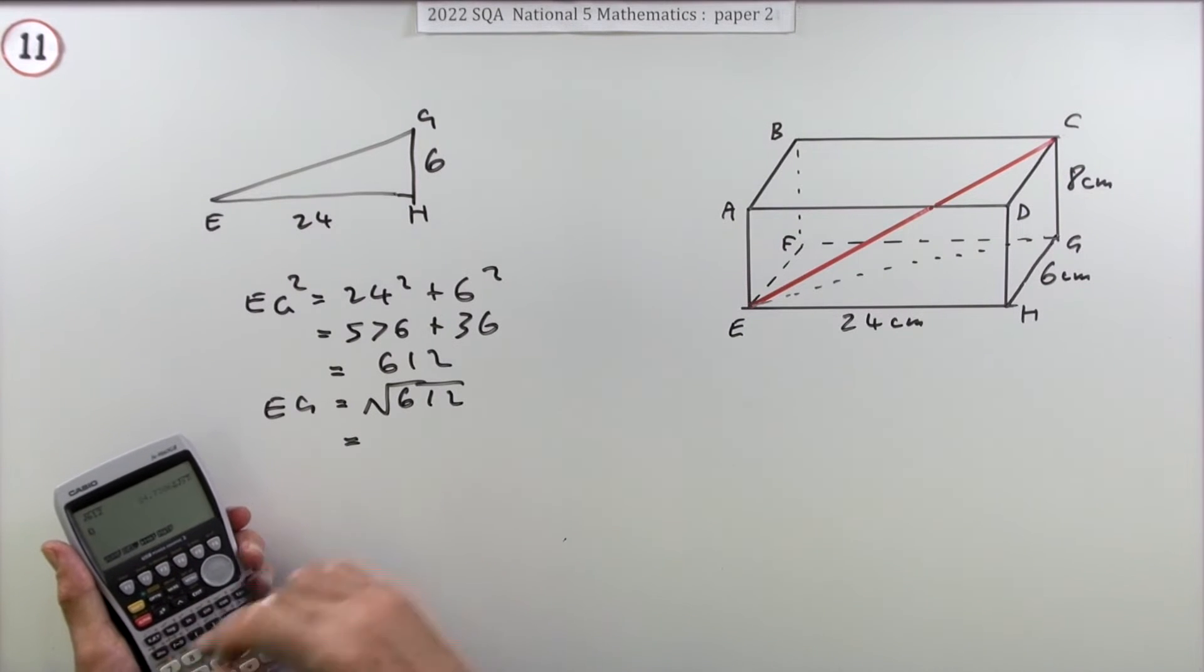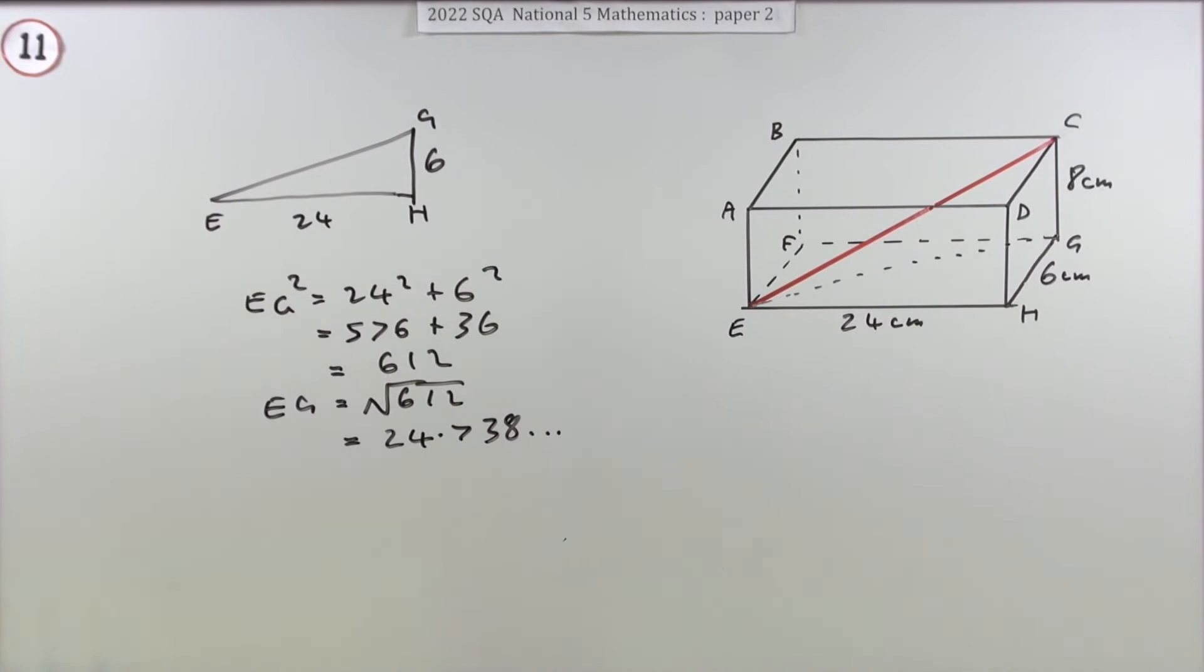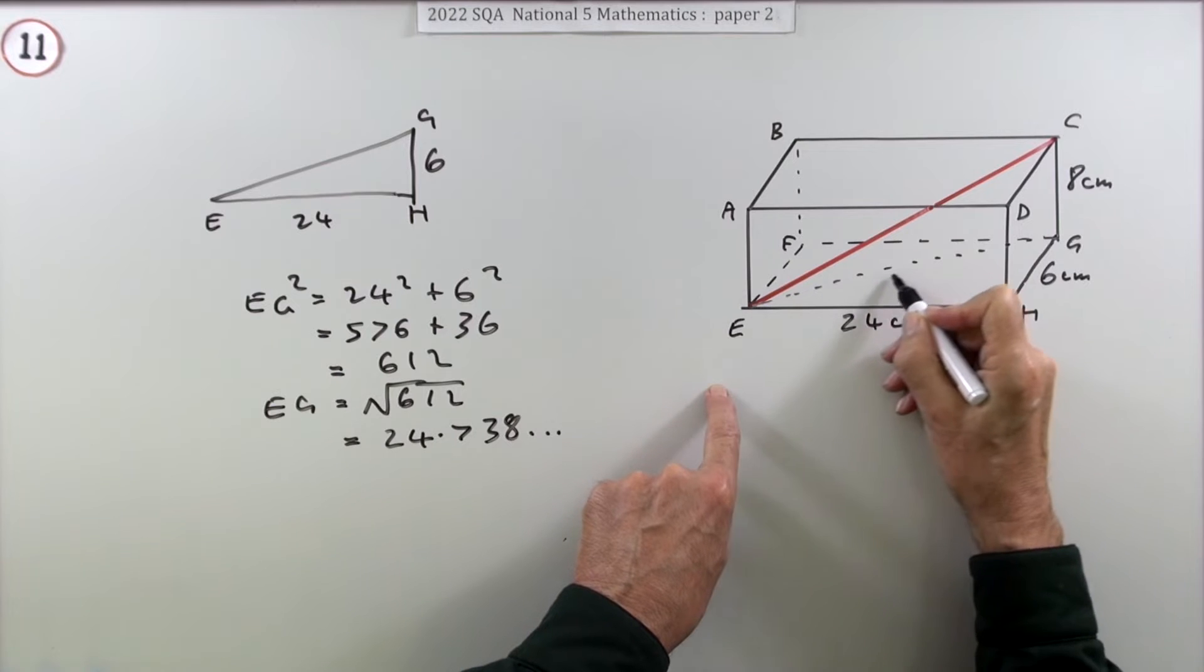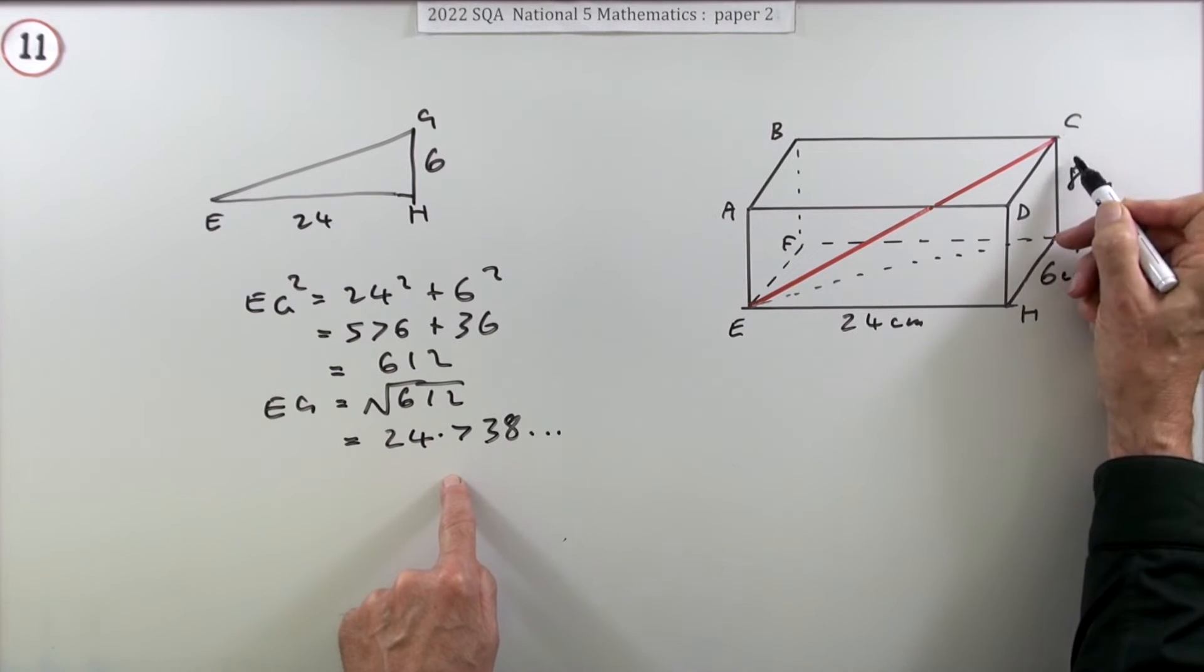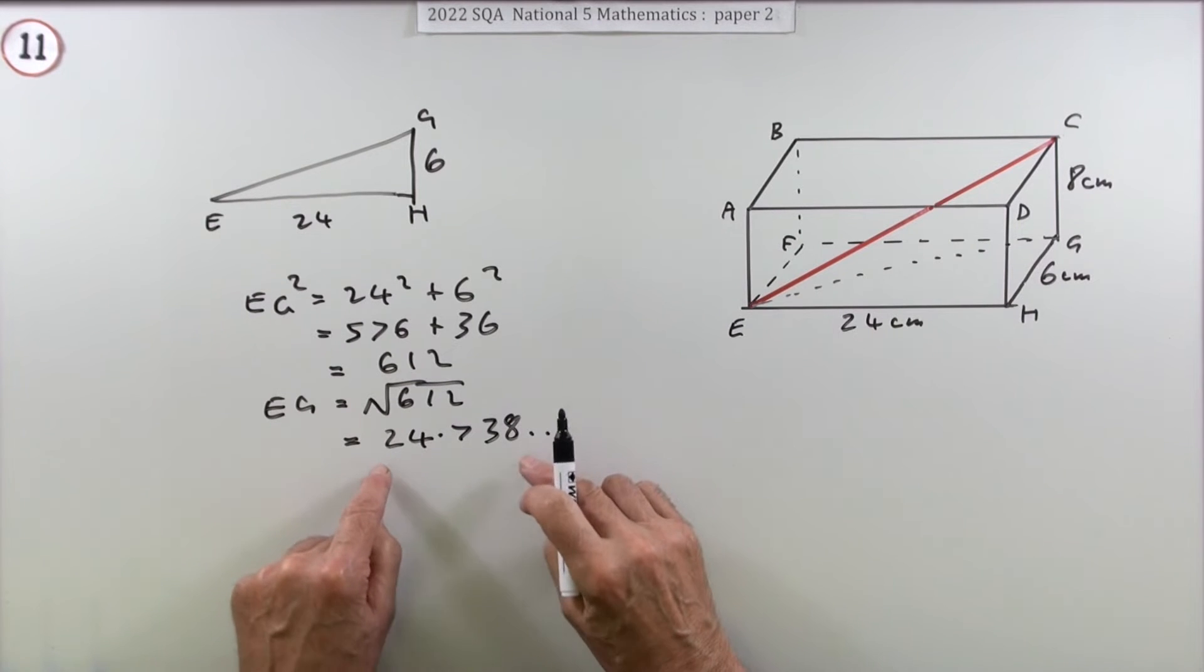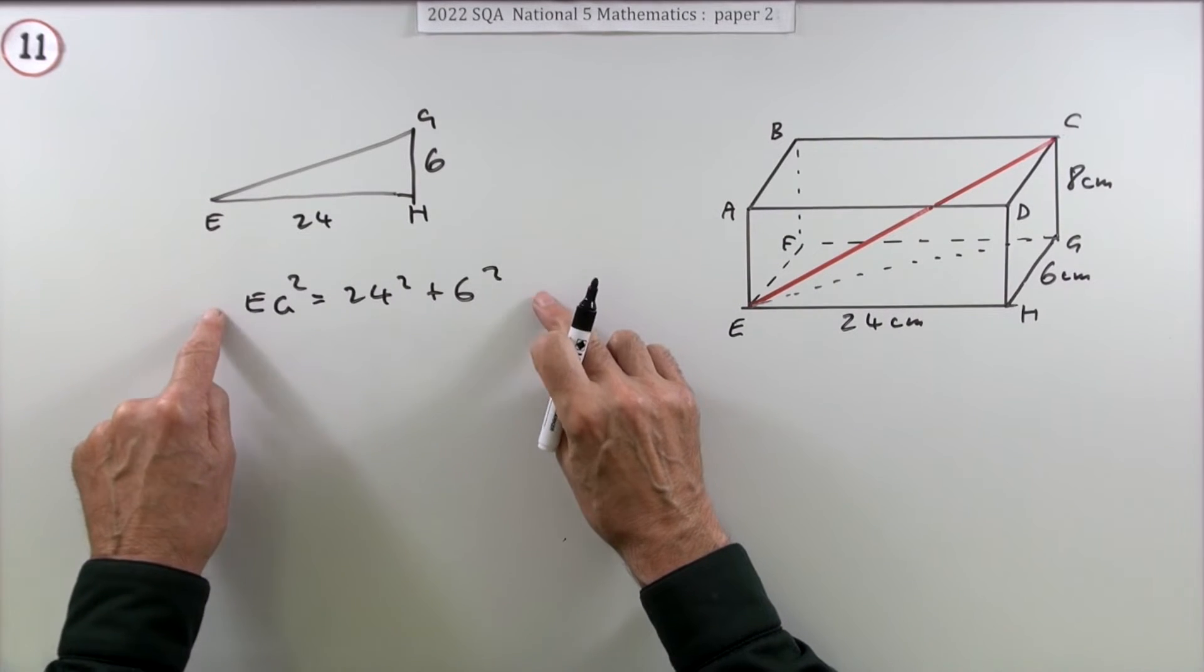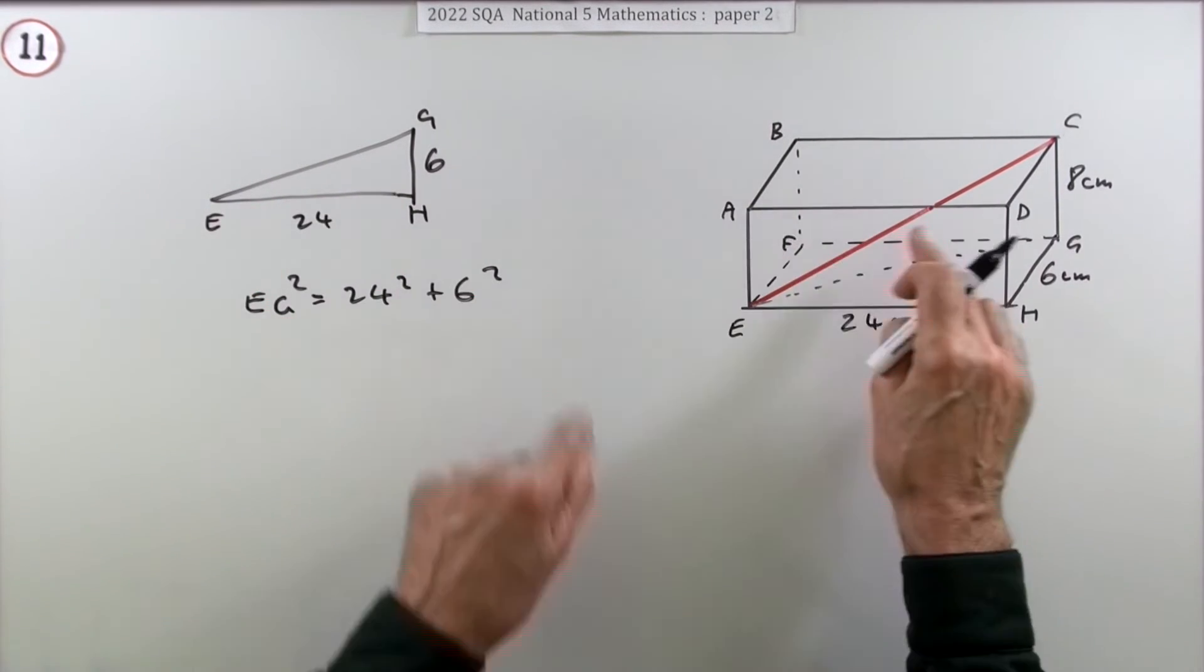Then use that in the next part. Now you know the length of this line, you could do Pythagoras with that number and the 8. However, that would just be a complete waste of time as well as introducing inaccuracies by having to round this number off.